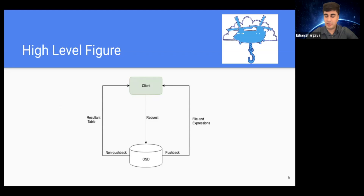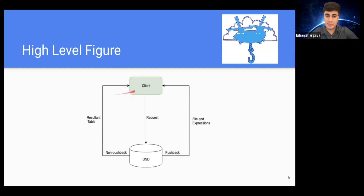This is a high-level figure of what's going on. At the client, we push down a request to the OSD. The request has different serialized elements such as the file format, file size, and expressions. We have two cases: non-pushback and pushback. In the non-pushback case, only the resultant table is returned to the client after expressions are applied on the server. In the pushback case, the file and expressions are returned to the client, where the expressions are applied to the file to get the resultant table.